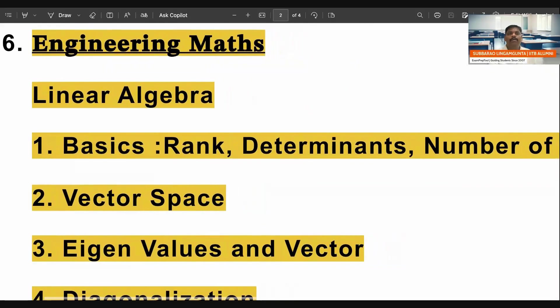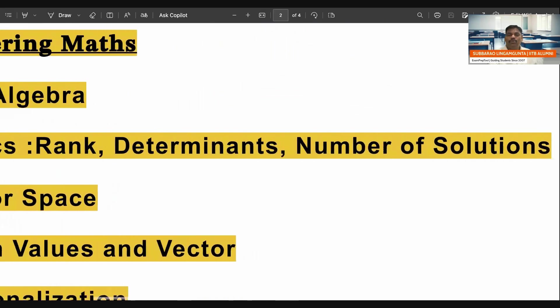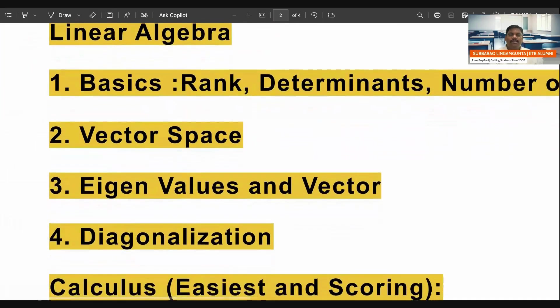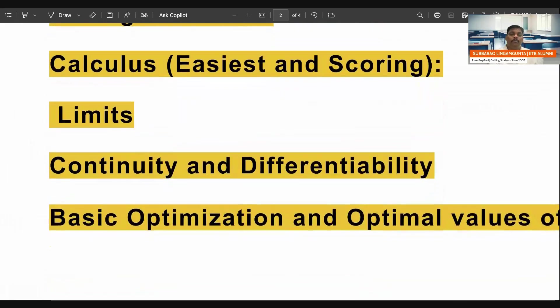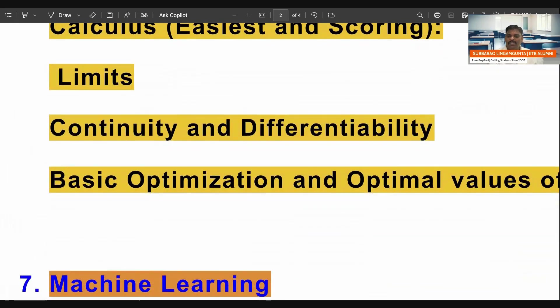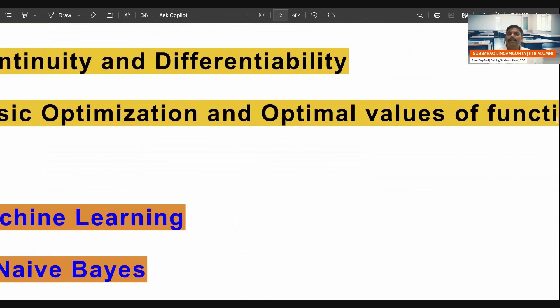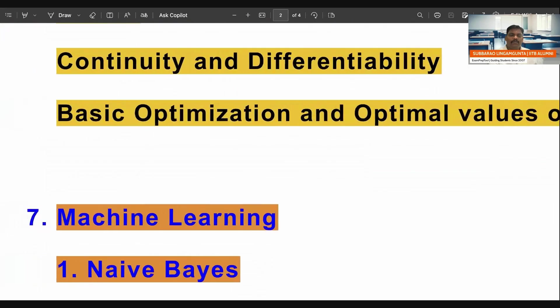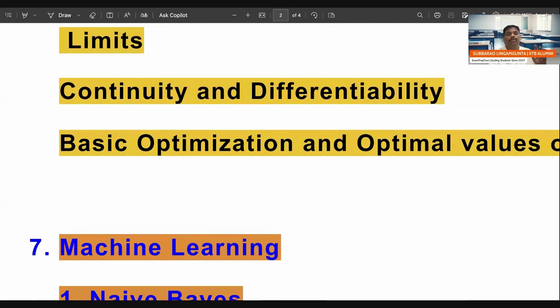Next one is engineering mathematics. Linear algebra, which contains things like rank, how to find out rank, determinants, number of solutions, vector space, eigenvalues and eigenvectors, diagonalization. And the calculus - limits, continuity and differentiability. Basic optimization and the optimal values of function. Remember, it is a high-scoring subject. Mathematics is a high-scoring subject. Please have a look.